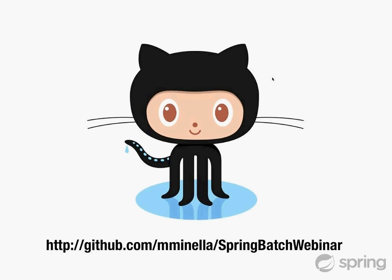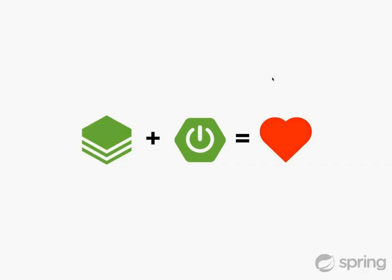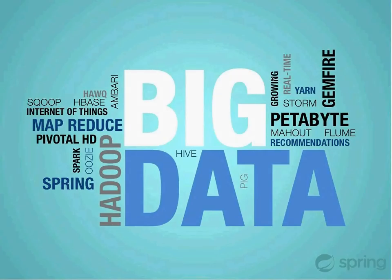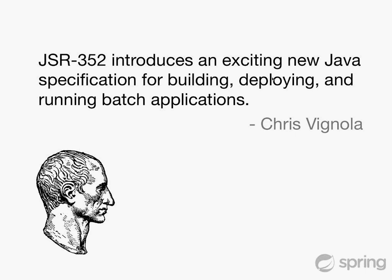The stack we'll cover today: first, JSR 352, which is the batch specification — we'll walk through what it provides, what it doesn't provide, and how Spring Batch works with it. Then we'll talk about Spring Boot and how it makes your life a little better with Spring Batch, and also big data and how batch processing — specifically Spring Batch — works into that.